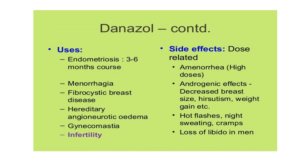The uses of danazole: first, endometriosis — it helps in improvement in 75% of cases by inhibiting ovarian function, giving relief of dysmenorrhea, pain, and excessive bleeding. It is used for a course of three to six months. It is also used for menorrhagia, fibrocystic breast disease, hereditary angioneurotic edema, gynecomastia, and infertility. In menorrhagia, danazole reduces menstrual blood loss and is the second-line drug after oral progesterone. Fibrocystic disease, also called chronic cystic mastitis, is treated for three to six months.